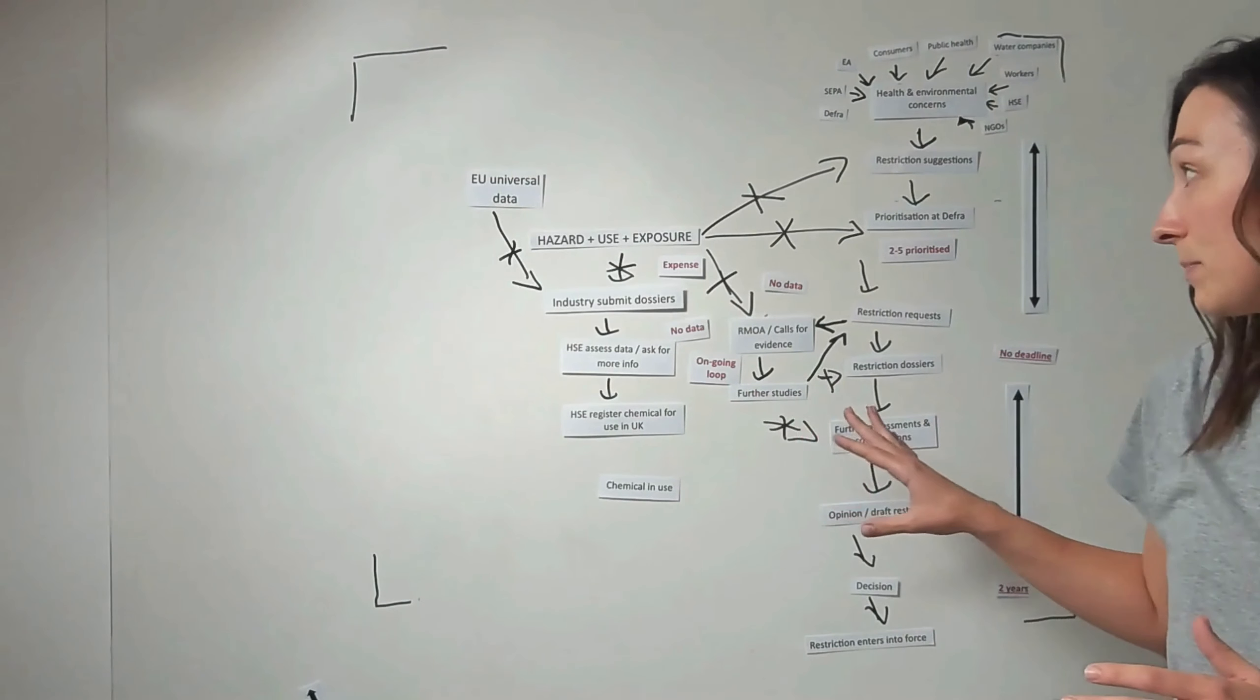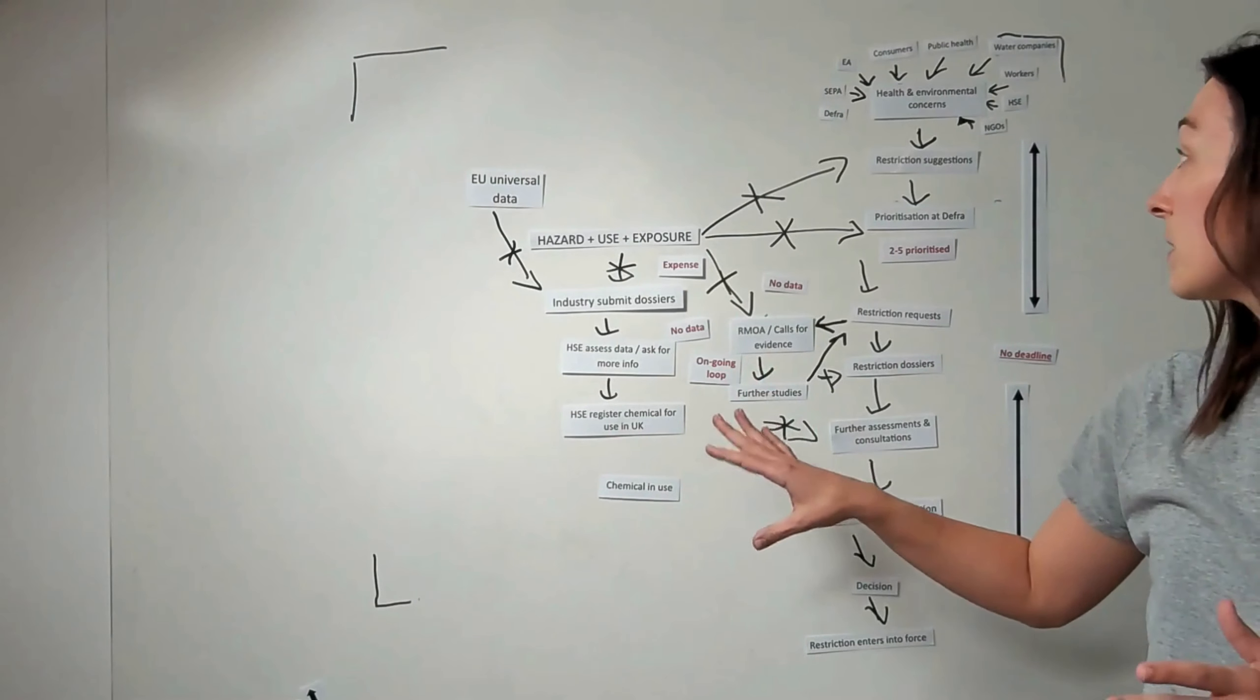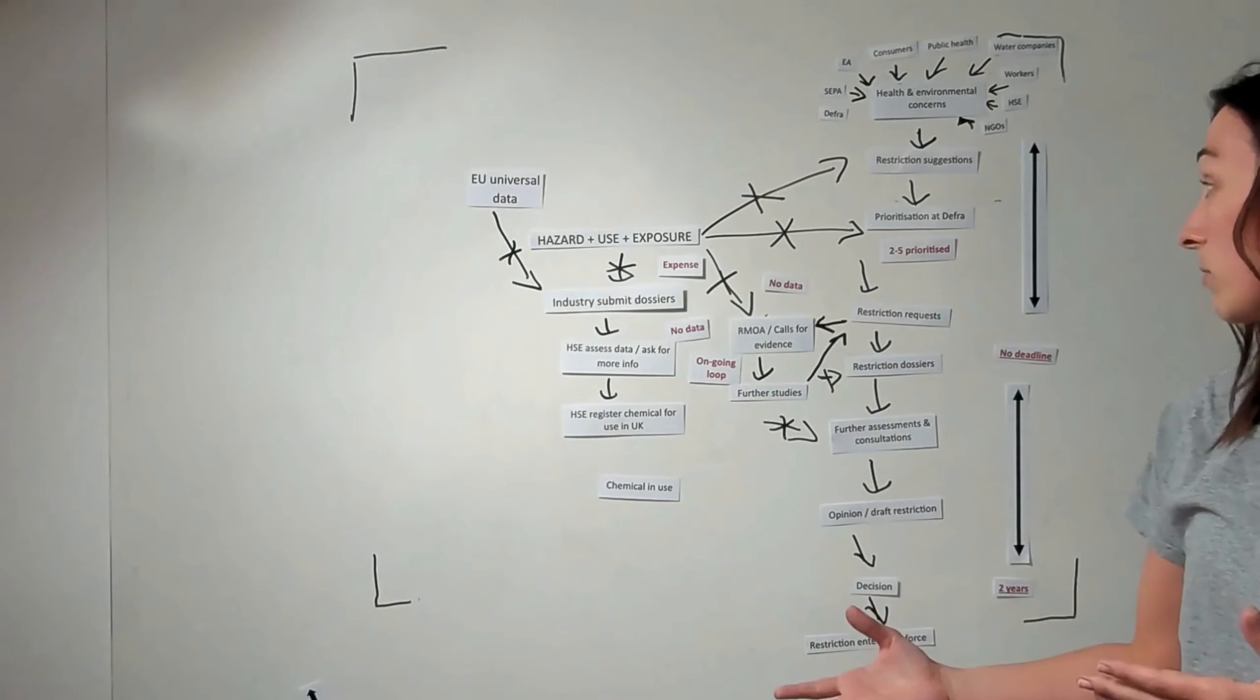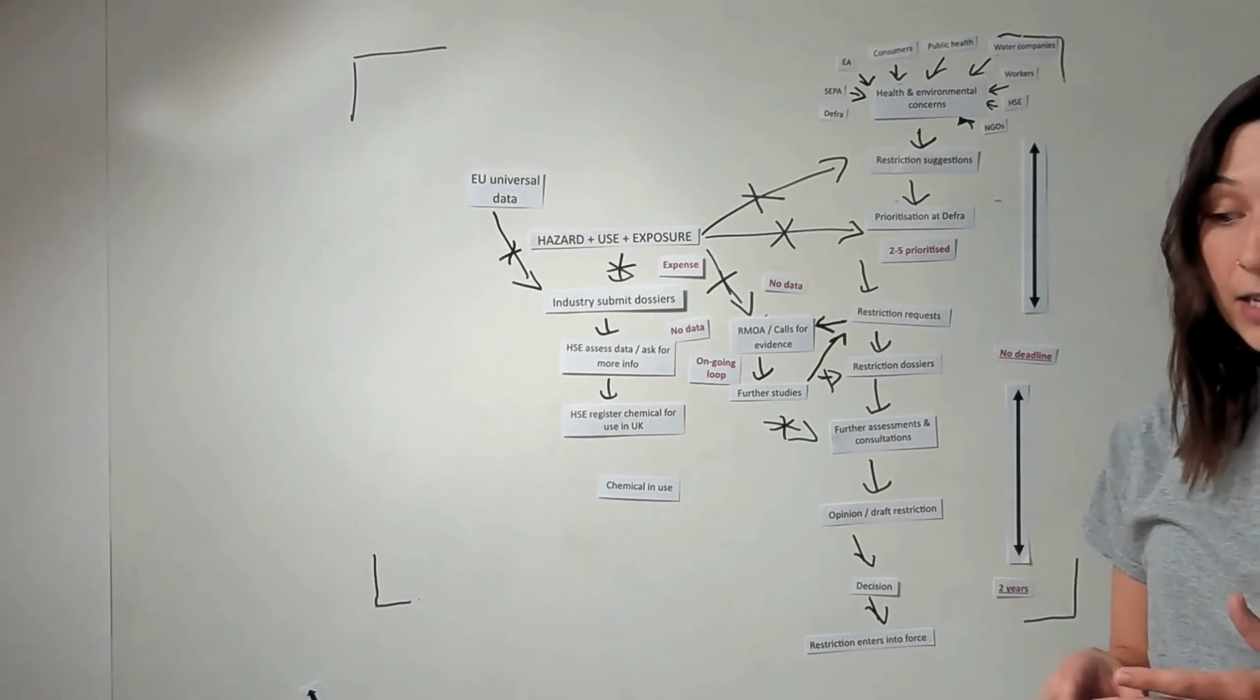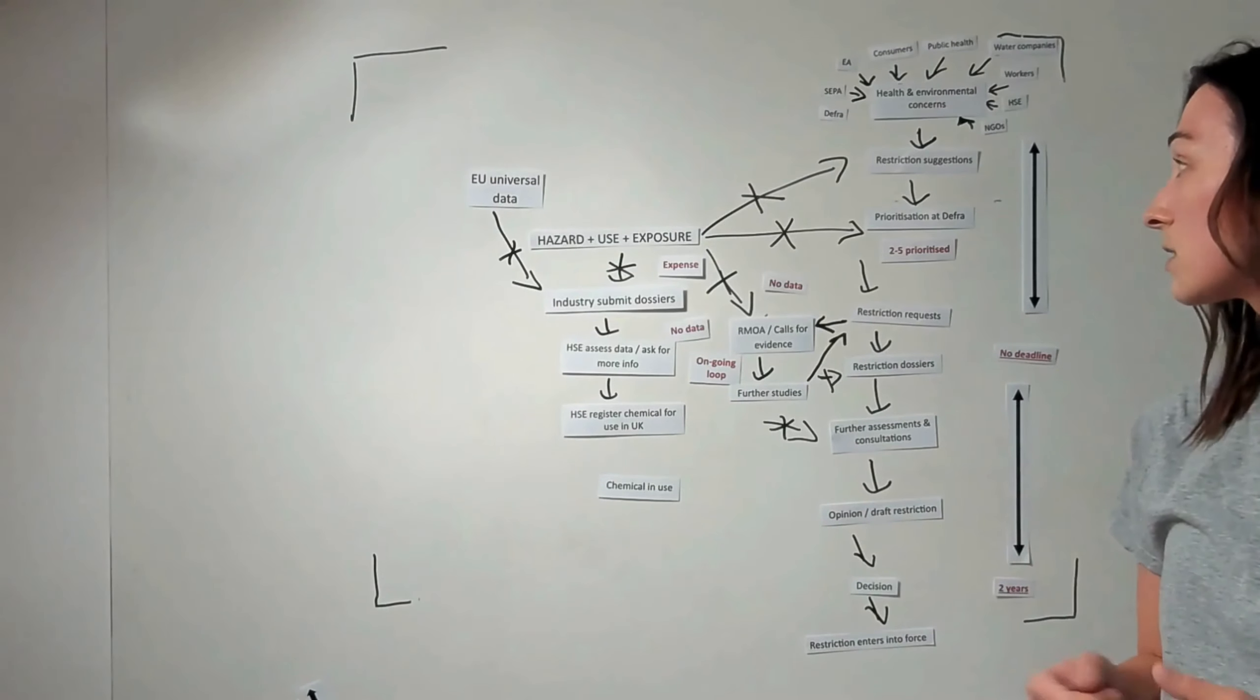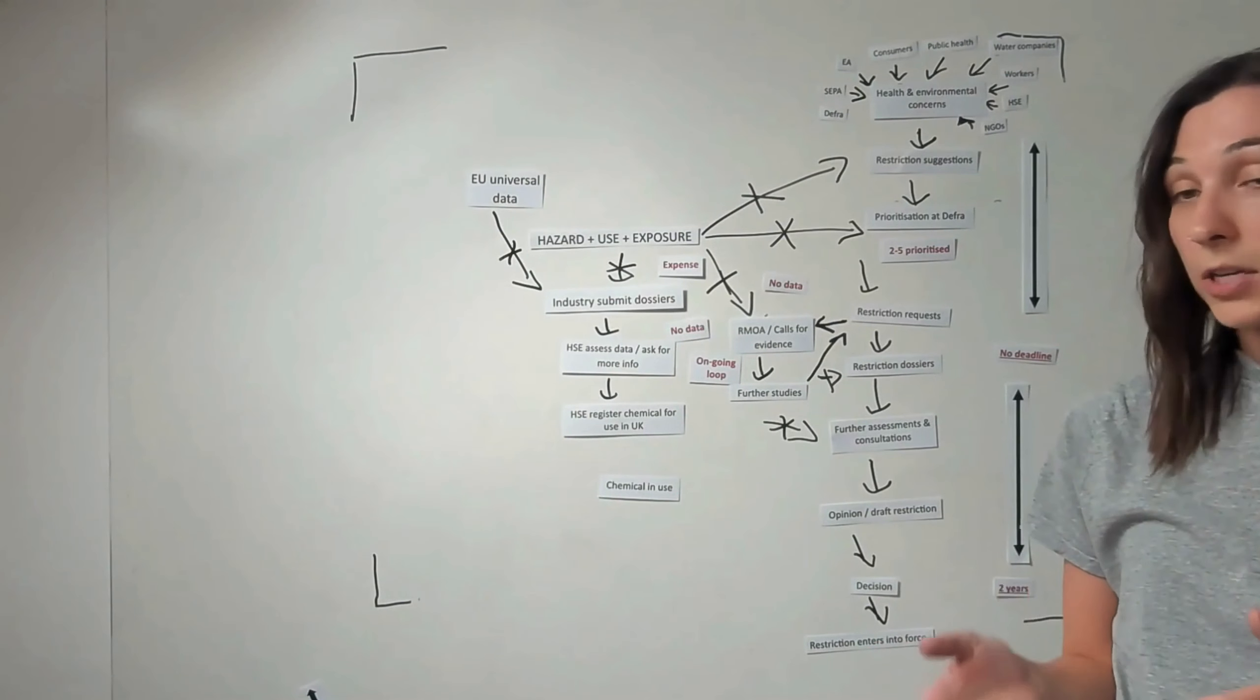Until we have a robust chemical regulation system set up in the UK, one of the ways of doing this would be to align with the EU data that's already in circulation and the restriction decisions that come from the EU. When we then have GB-specific data, we can tailor our approaches to restrictions with that information once it's accessible. In the meantime, to improve the efficiency and effectiveness of our approach, we can look at systems such as taking a grouping approach to chemical restrictions to help speed up restrictions and to prevent cases of regrettable substitution, where we replace one restricted chemical with another one with similar harmful characteristics, or starting to phase out harmful chemicals such as endocrine disrupting chemicals or persistent, bioaccumulative, and toxic chemicals, which we know are harmful for human health and the environment.